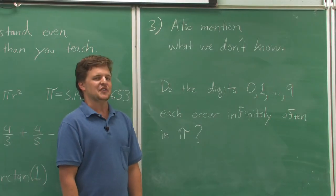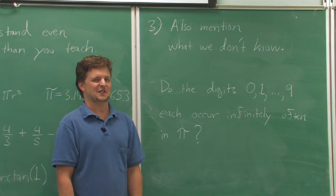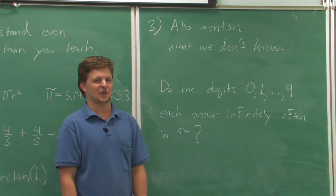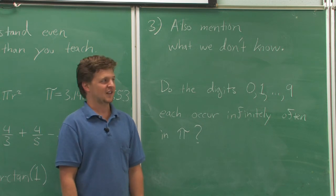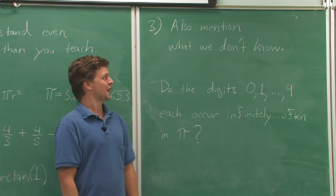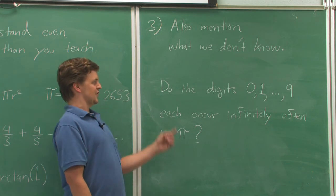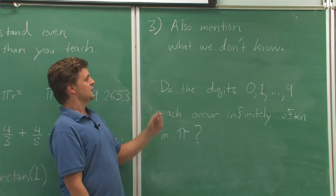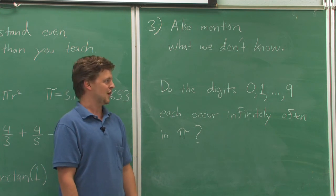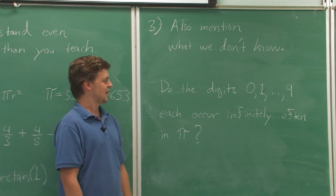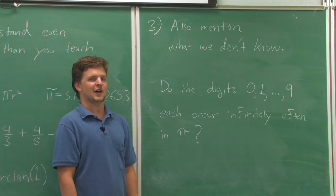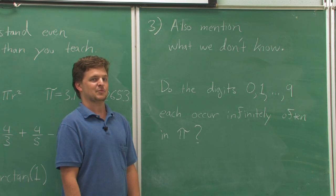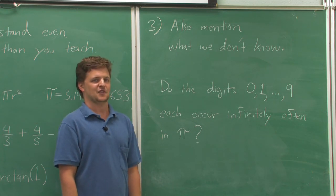Last, but not least, curiosity is one of the real good motivators to learning. Half of mathematics is what we don't know — probably much more than half, actually. So it's good to mention, as much as you have time for, what we don't know. For instance, this question, which no one knows the answer to: do the digits 0, 1, 2, 3, 4, 5, 6, 7, 8, 9 each occur infinitely often in the decimal expansion of pi? No one knows the answer to this.